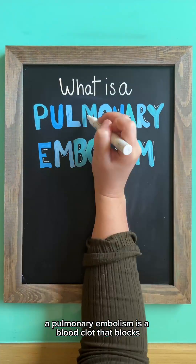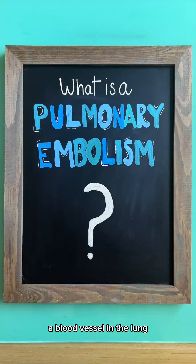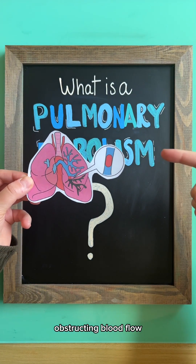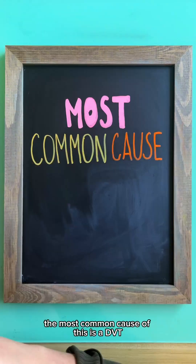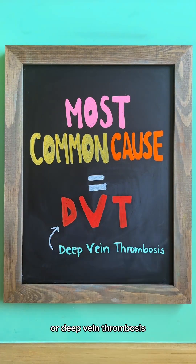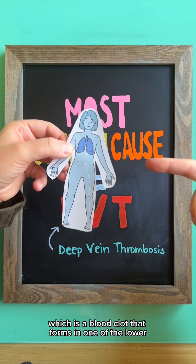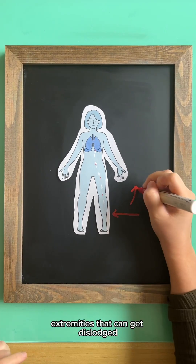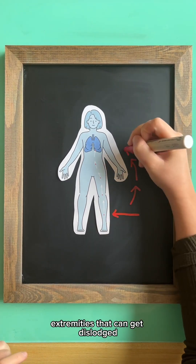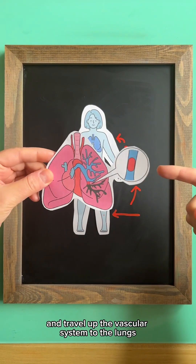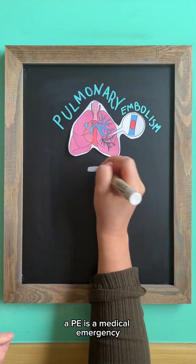A pulmonary embolism is a blood clot that blocks a blood vessel in the lung, obstructing blood flow. The most common cause of this is a DVT, or deep vein thrombosis, which is a blood clot that forms in one of the lower extremities that can get dislodged and travel up the vascular system to the lungs.